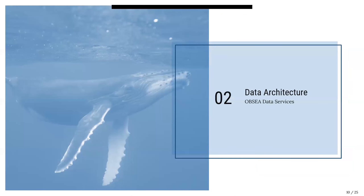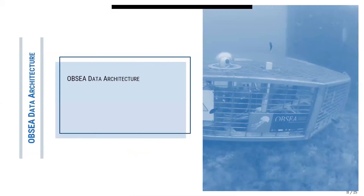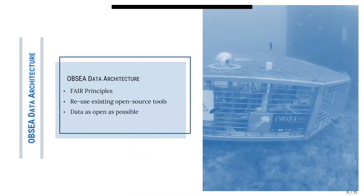Once we deploy this, how can users access our data? We follow the FAIR principles—findable, accessible, interoperable, and reusable. We don't want to reinvent the wheel, so we use open-source existing tools and try to open data as much as possible. Since we have different types of data, we need to support this heterogeneity of data.